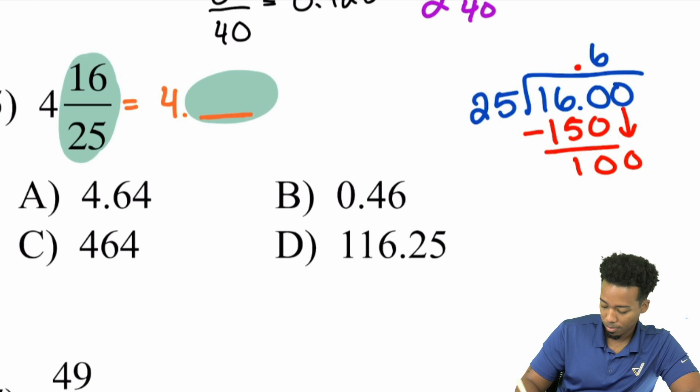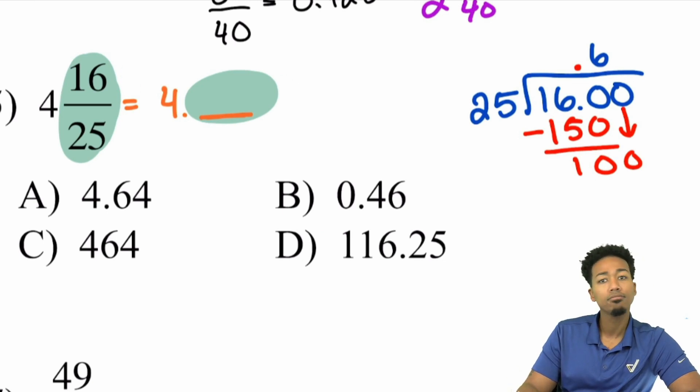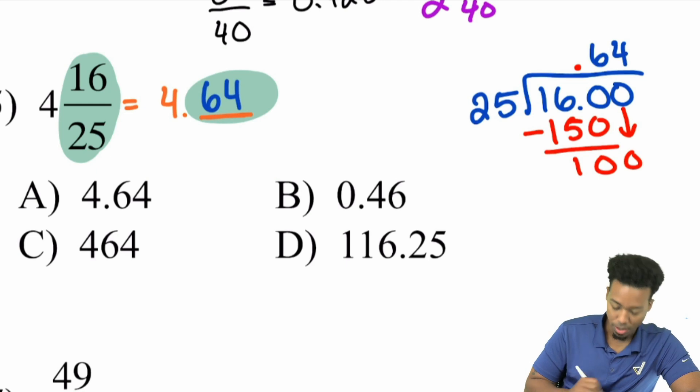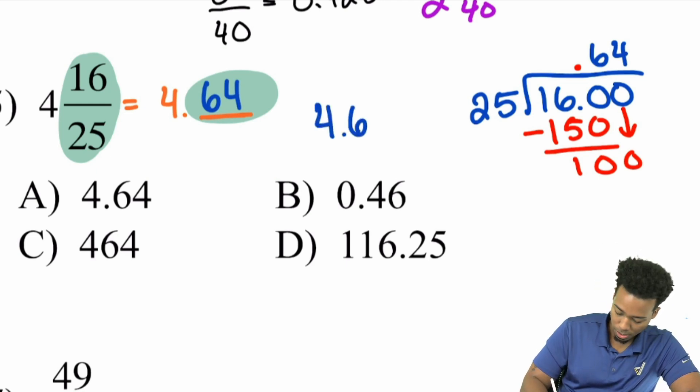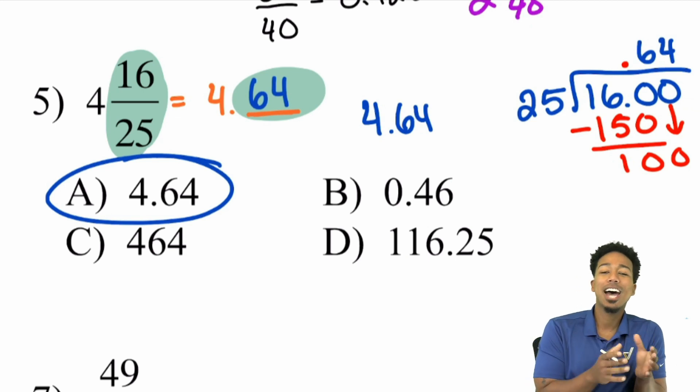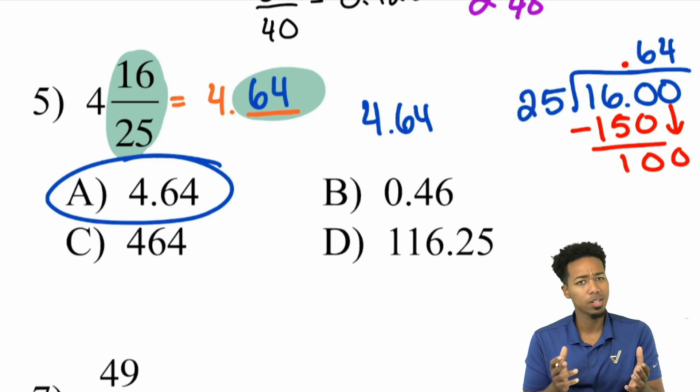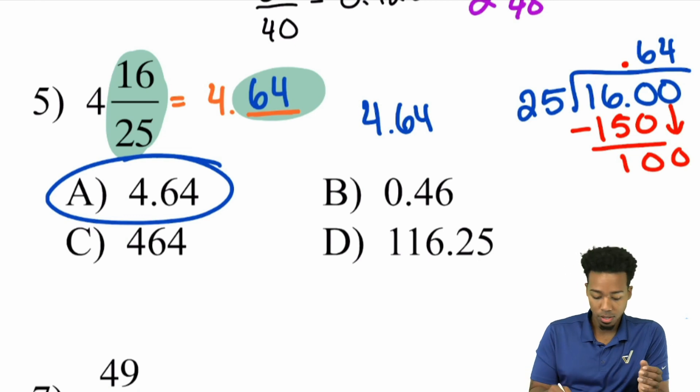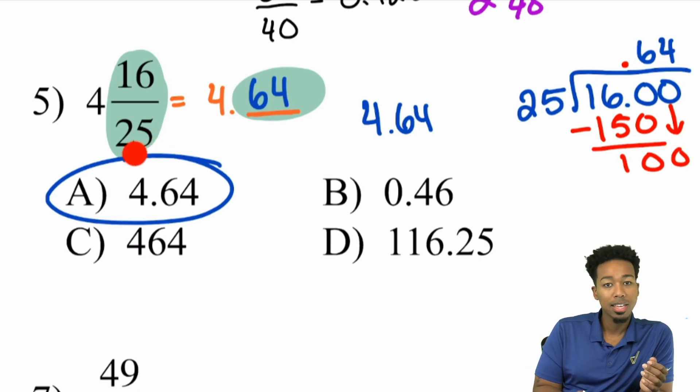So we subtract the 150, leaving us with 10. And remember, don't forget, look at our decimal right there. Put it in the same place so you're not messed up. And then next up, we will drop this 0 down. How many times does 25 go into 100? That's 4. And so here, the answer would be 0.64 that we're tacking on right there. And so the answer is 4.64. Booyah. And there we have it.